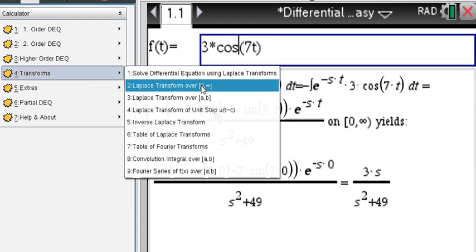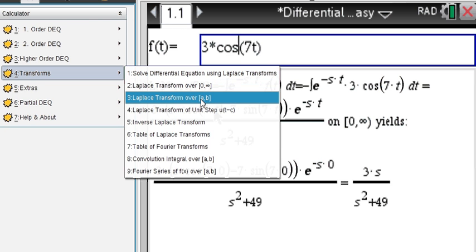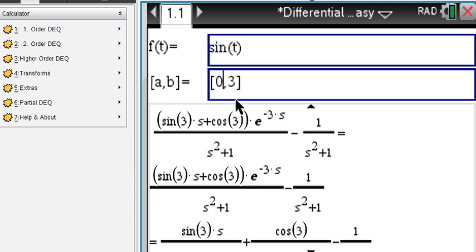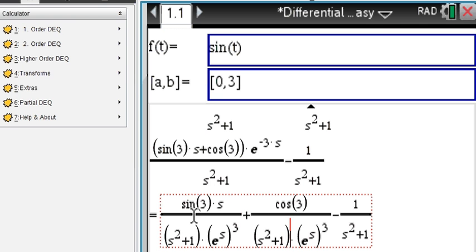Also, instead of using the interval from 0 to infinity, you can determine your own interval. If you want to go, let's say, from 0 to 3 of sine of t, you will end up step by step again with this Laplace transform. So of course if you would enter here infinity, you would get what we had before.